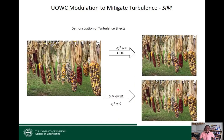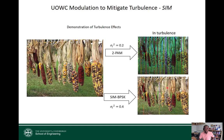To further illustrate, we transmitted an image of a cone using both methods. In still water, both OOK and SIM recover the image well. When turbulence is present, the OOK (2-PAM) image is completely distorted, but with BPSK-SIM we can still recover the image — with some errors, but far better than OOK — even under very strong turbulence.